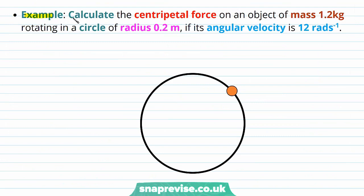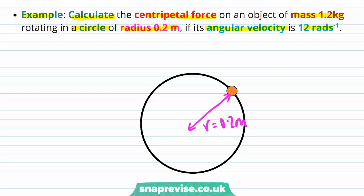Let's do an example. Calculate the centripetal force on an object of mass 1.2 kilograms rotating in a circle of radius 0.2 metres if its angular velocity is 12 radians per second. Here's our object rotating in a circle of radius 0.2 metres, which has a mass of 1.2 kilograms.